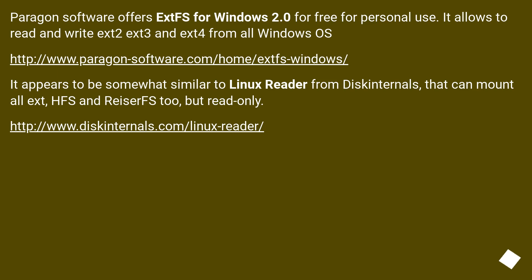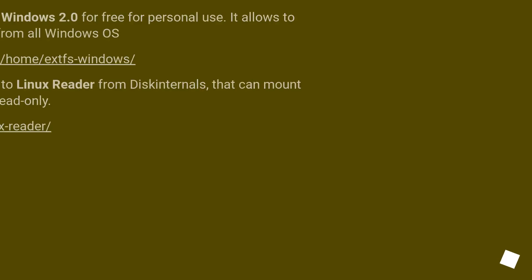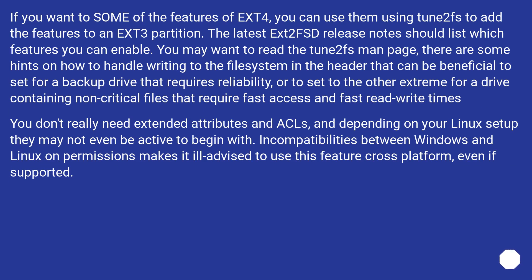Paragon Software offers exts for Windows 2.0 for free for personal use. It allows reading and writing ext2, ext3, and ext4 from all Windows OS. It appears to be somewhat similar to Linux Reader from Disk Internals, which can mount all ext, HFS, and ReiserFS too, but read only. If you want some of the features of ext4, you can enable them using Tune2fs to add the features to an ext3 partition. The latest Ext2FSD release notes should list which features you can enable.